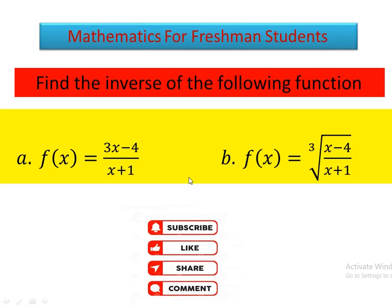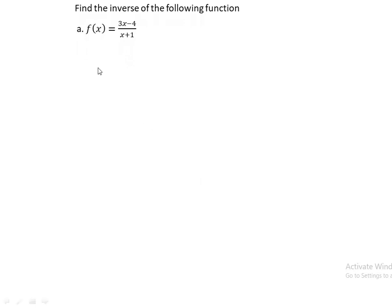Let's start from part a: find the inverse of f(x) = (3x - 4)/(x + 1). To find the inverse of any function in this form, we follow these steps: first, write y as f(x); then interchange x and y; solve for y; and finally write y as f inverse of x.